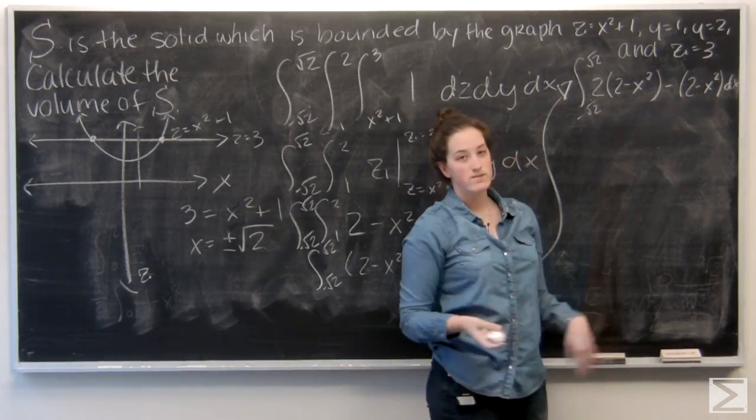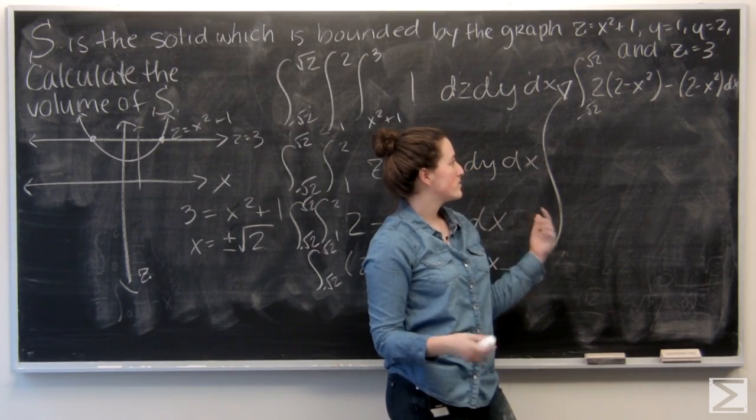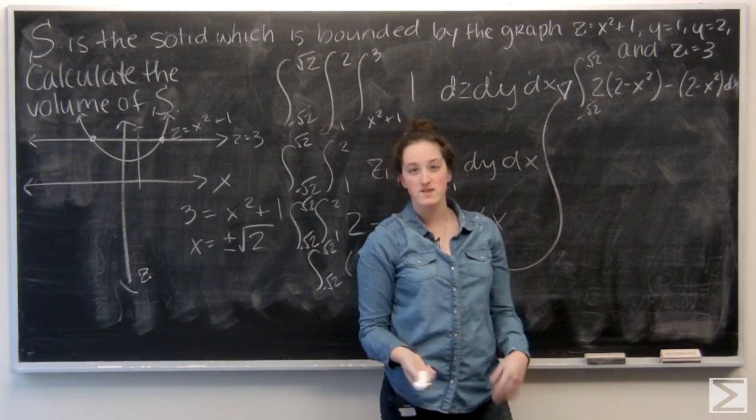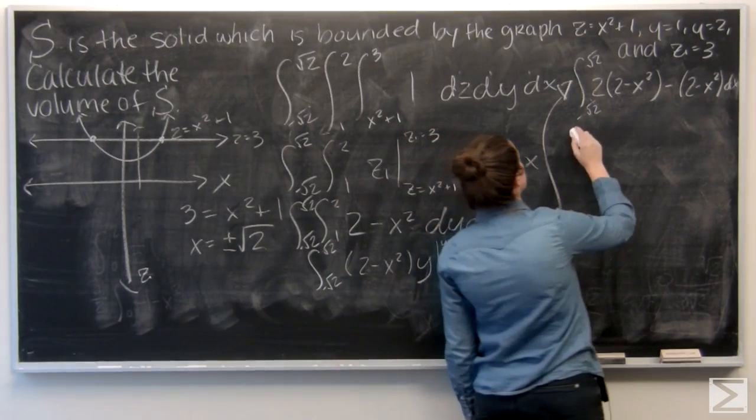So these are like terms, so I'm going to subtract. 2 minus 1 is 1, so I'm just left with 2 minus x squared. That's a little bit easier.